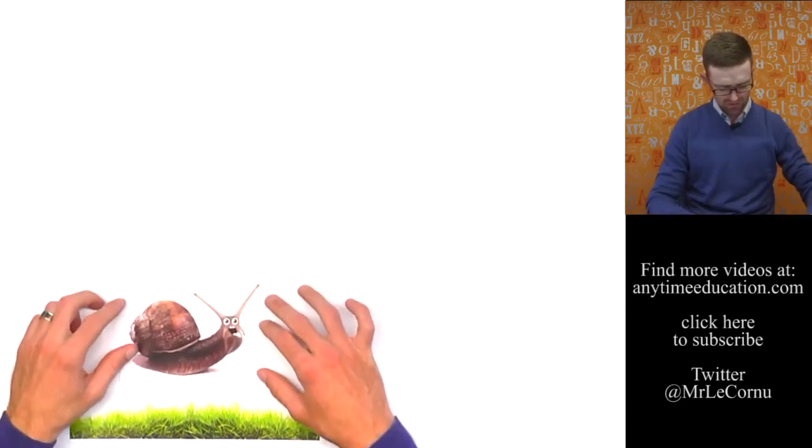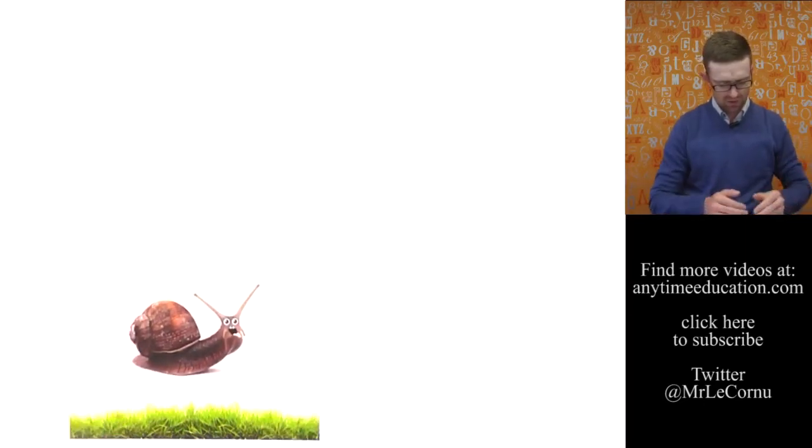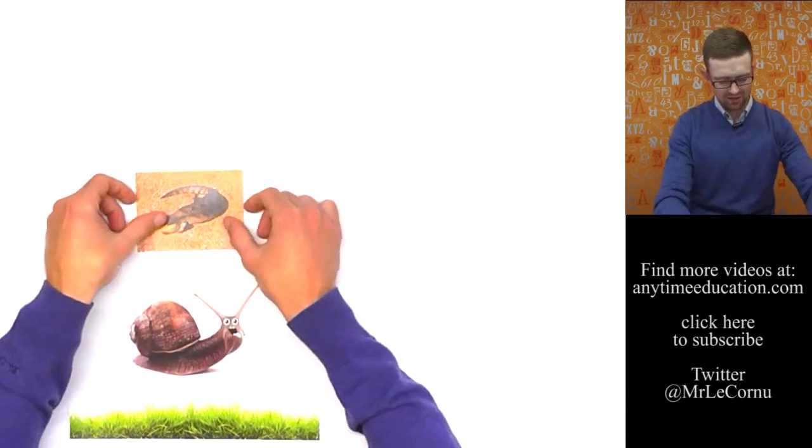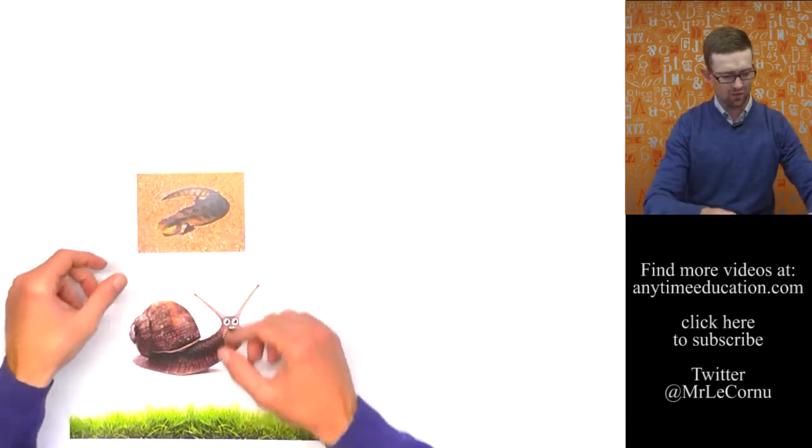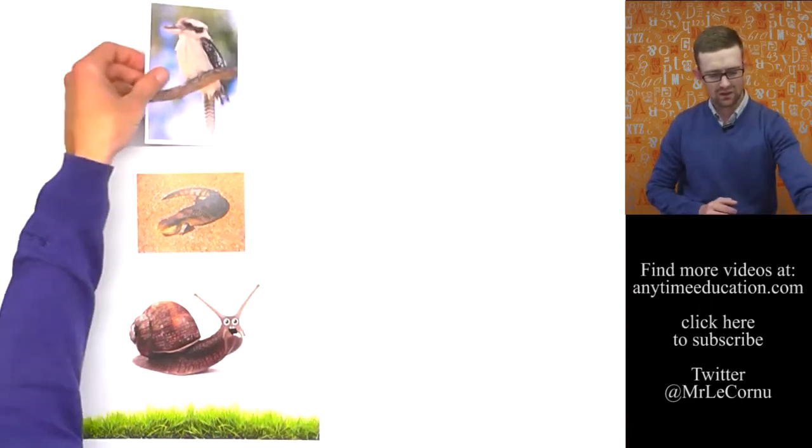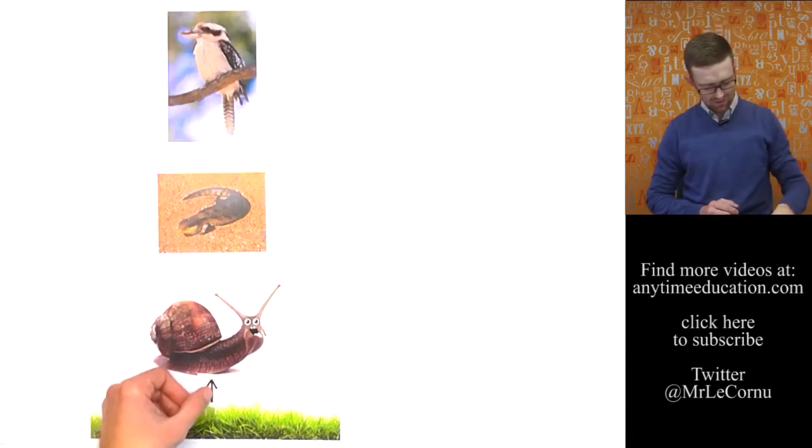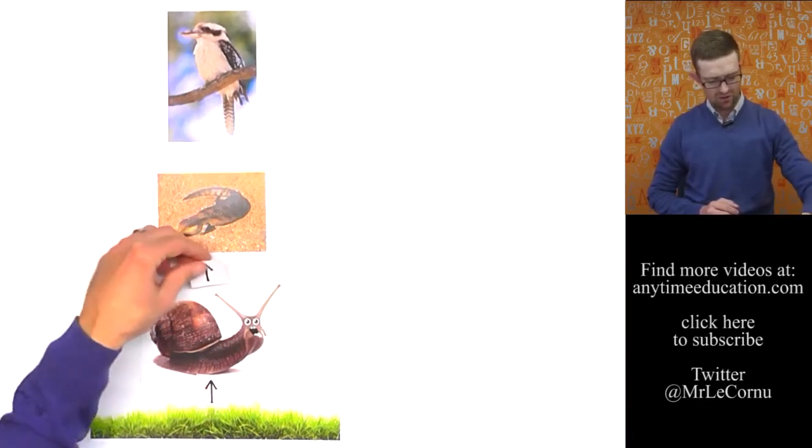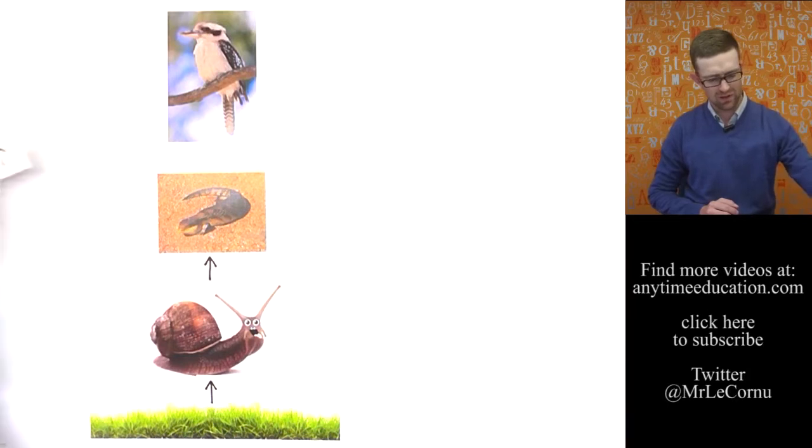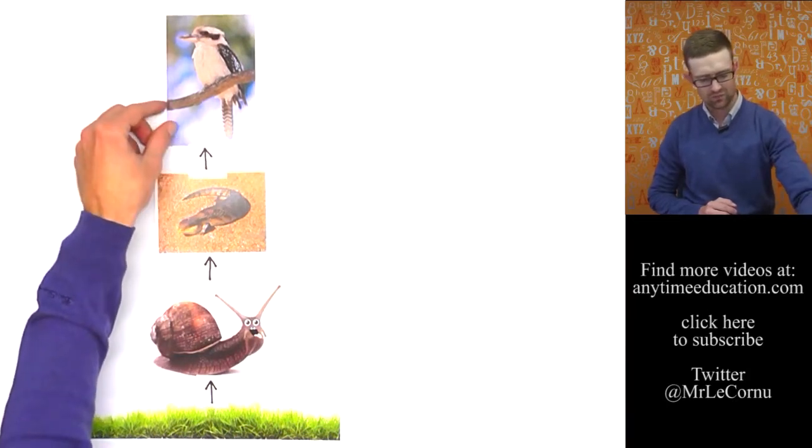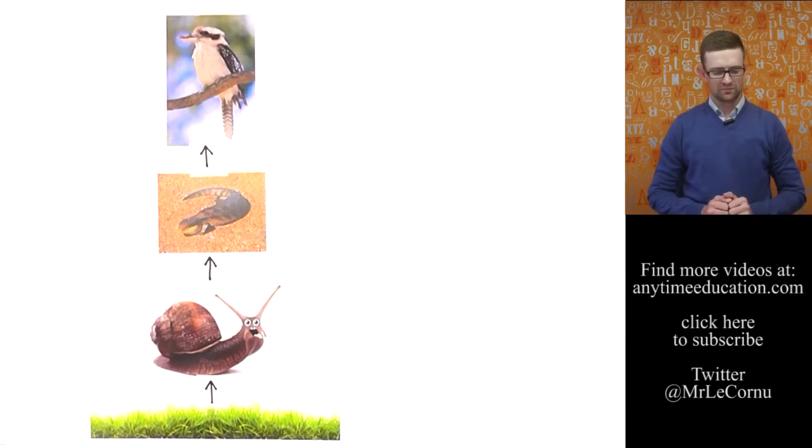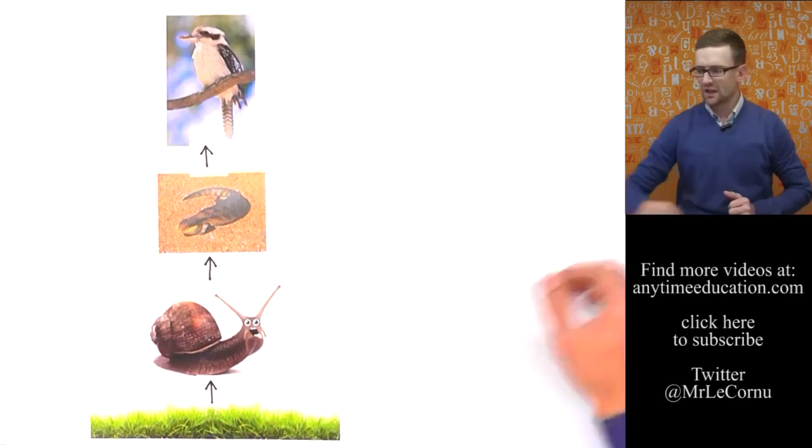Then we bring in this guy here. Snail eats the grass and then this lizard eats the snail and this kookaburra eats the lizard. Adding in these arrows helps us to show the feeding patterns and the way the food chain works. And so there we have it, our food chain.